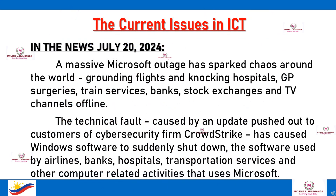A massive Microsoft outage has sparked chaos around the world, grounding flights and knocking hospitals, GP surgeries, train services, banks, stock exchanges, and TV channels offline. The technical fault, caused by an update pushed out to customers of cybersecurity firm CrowdStrike, has caused Windows software to suddenly shut down — the software used by airlines, banks, hospitals, transportation services, and other computer-related activities that use Microsoft.